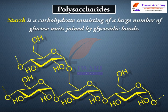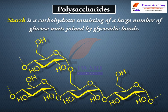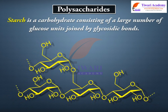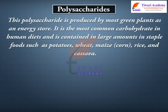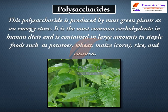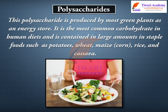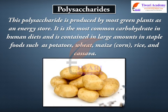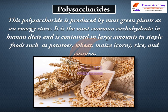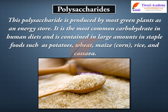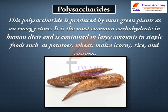Starch is a carbohydrate consisting of a large number of glucose units joined by glycosidic bonds. This polysaccharide is produced by most green plants as an energy store. It is the most common carbohydrate in human diets and is contained in large amounts in staple foods such as potatoes, wheat, maize, corn, rice, and cassava.